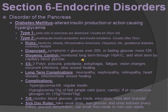Diagnosis: diabetes symptoms plus glucose over 200, or fasting glucose over 126. Glycemic control is monitored long term through hemoglobin A1c and short term by capillary blood glucose. Signs and symptoms are the three polys: polyuria, polydipsia, and polyphagia — they keep urinating, are really thirsty, and hungry. Other signs include fatigue, vision changes, recurrent infection, and slow wound healing. Long-term complications include neuropathy, nephropathy, retinopathy, heart disease, infection, and slow wound healing.